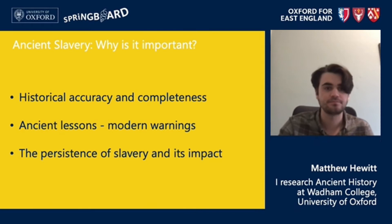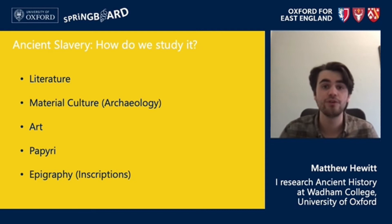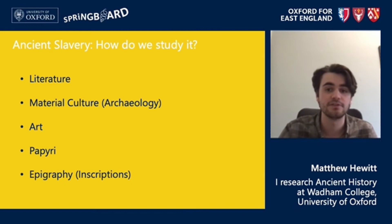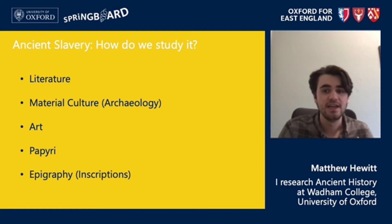Even if we accept that studying ancient slavery is important and relevant, we then turn to the trickier question of how do we study it. The traditional sources used by ancient historians are ancient literature — the historical, philosophical or political writings of contemporary authors.